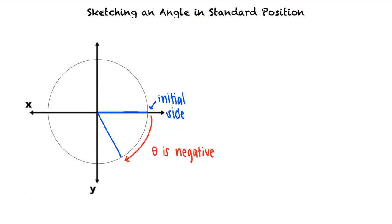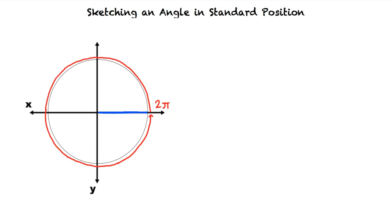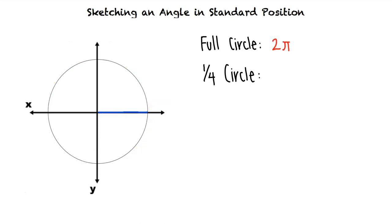An angle that makes a complete revolution of the circle sweeps 2 pi radians. Using this fact, we can find the radian measures of some quarter-turn angles. If we go one-fourth of the way around the circle, we have made one-fourth of a revolution, which means our angle will measure one-fourth of 2 pi. One-fourth of 2 pi is equal to pi halves radians.